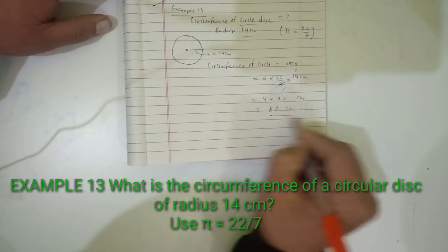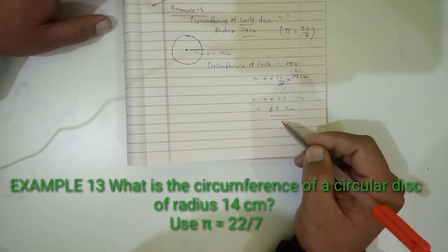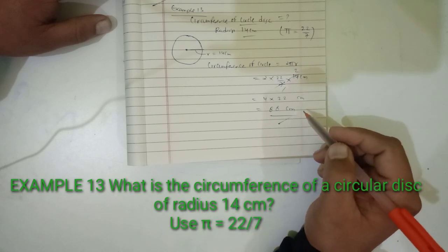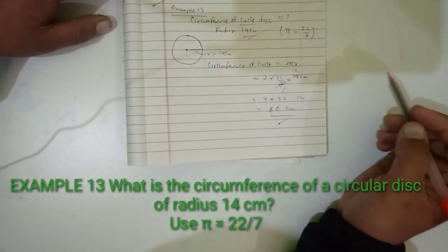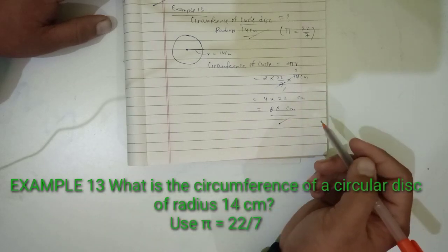So the answer is 88 centimeters. In this way we have solved Example 13 to find the circumference of a circular disc with radius 14 centimeters. The final answer is 88 centimeters. Thank you.